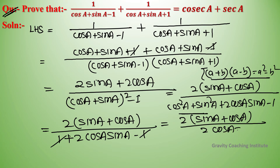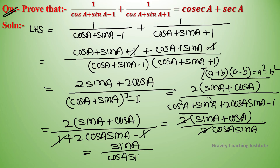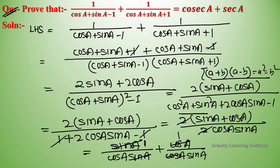Here 2 cancels, so we have sin A upon cos A sin A plus cos A upon cos A sin A. Then sin A and sin A cancel, and cos A and cos A cancel, giving 1 upon cos A.